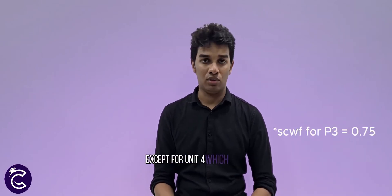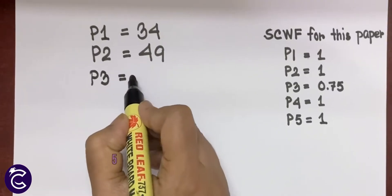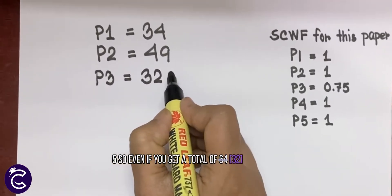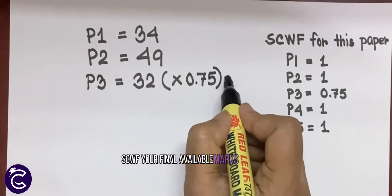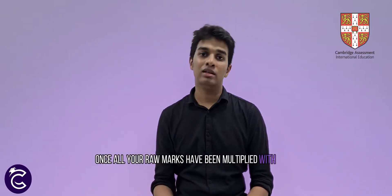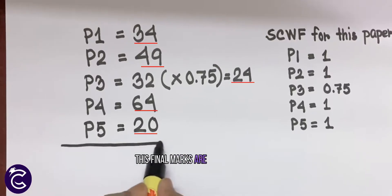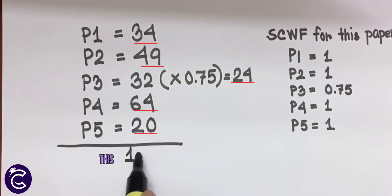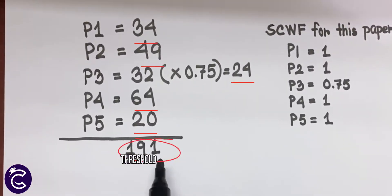For this particular physics example, most of the scale factors are 1, except for component 4 which is 0.75. So even if you get 64 out of 100, after multiplying by the weighting factor, your final weighted marks become 48. Once all your raw marks have been multiplied with their specific weighting factors, these final marks are added up. These totalled marks are then compared with the grade threshold of that particular exam session, which is analogous to the grade boundaries of Edexcel.